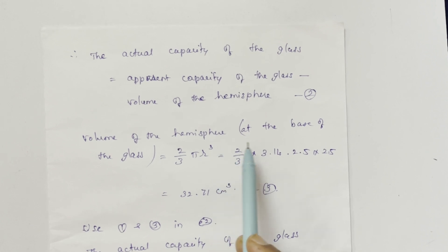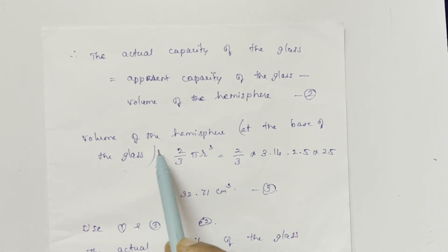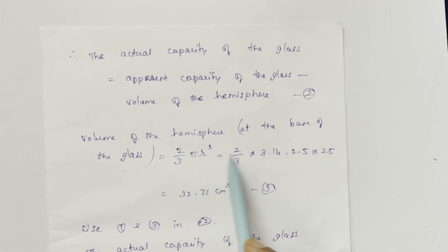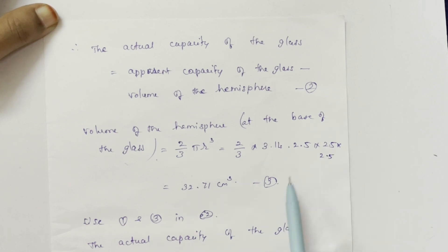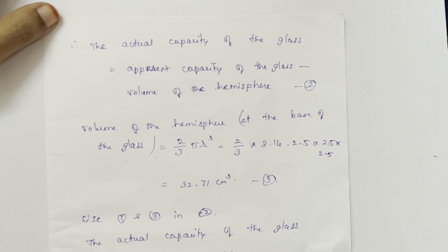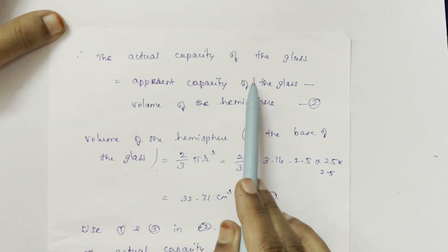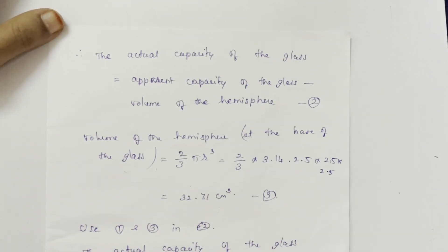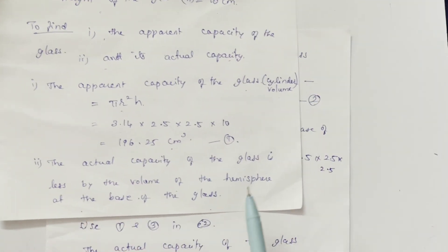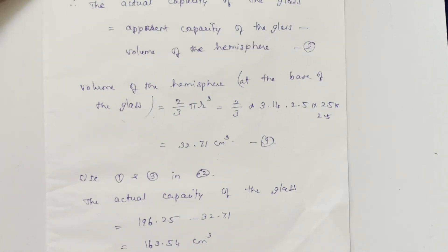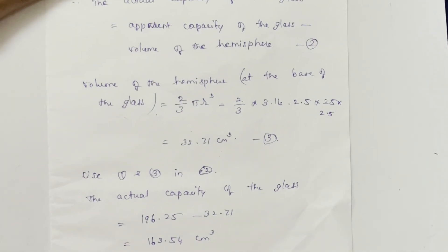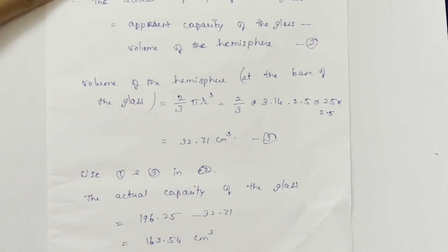The hemisphere is at the bottom of the glass. The volume of the hemisphere formula is 2/3 π r³. Here π is 3.14 and r is 2.5 cm. Substituting these values, we get the volume of the hemisphere. Using equation 1 (apparent capacity) and this result, we substitute to find the actual capacity of the glass.